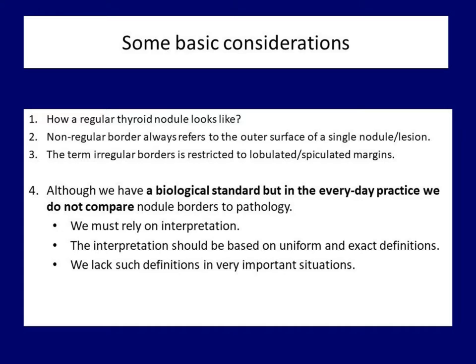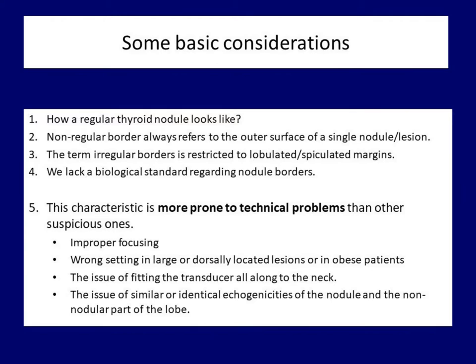The very basis of such consensus is the uniform and as exact as possible definition on which we can make a distinction between normal and pathological forms of borders. As we will see, none of the guidelines give such definitions. One of the reasons for the highest inter-observer variation of nodule margins among suspicious ultrasound findings is that this feature is very exposed to technical issues. Part of these problems can be avoided. Proper focusing and the change in settings from better resolution to better penetration are the clues. However, in obese patients or in large goiters, we cannot always prevent the technical problems.